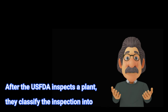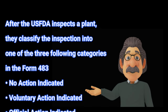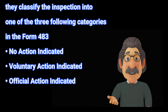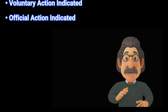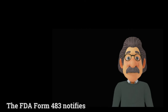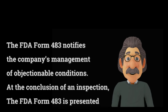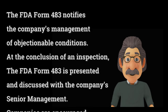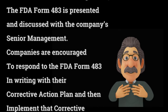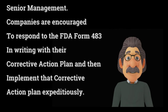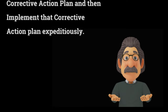After the U.S. FDA inspects a plant, they classify the inspection into one of three categories in the Form 483. The FDA Form 483 notifies the company's management of objectionable conditions. At the conclusion of an inspection, the FDA Form 483 is presented and discussed with the company's senior management. Companies are encouraged to respond to the FDA Form 483 in writing with their corrective action plan and then implement that plan expeditiously.